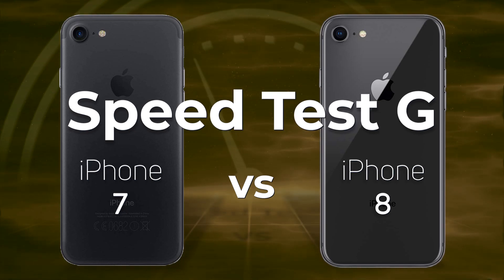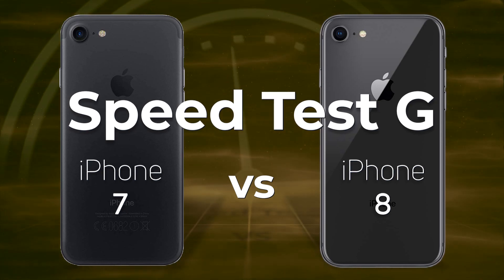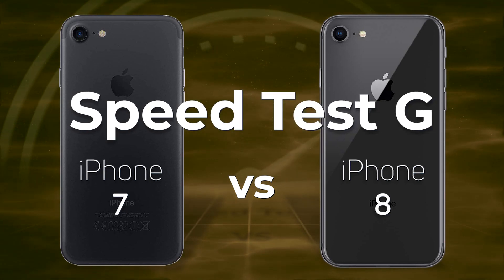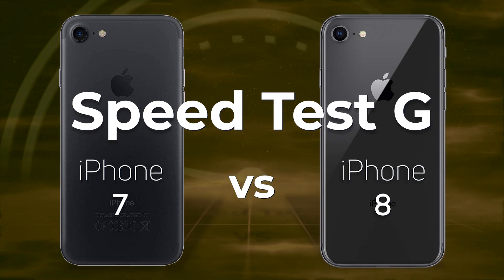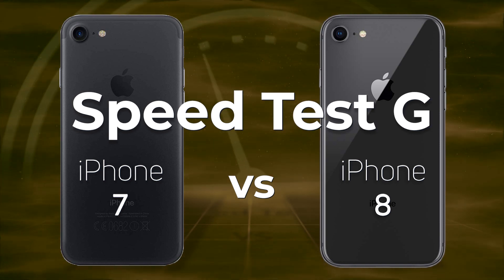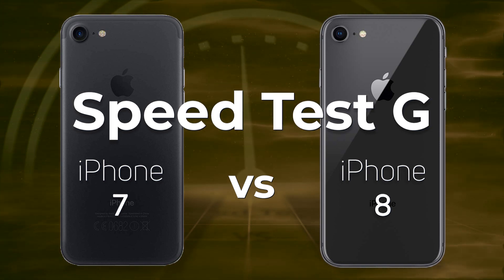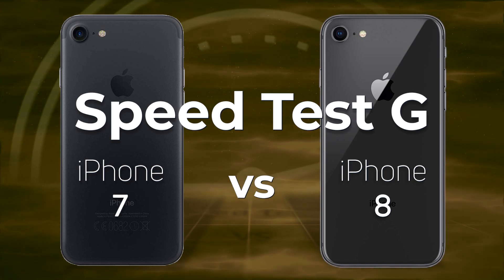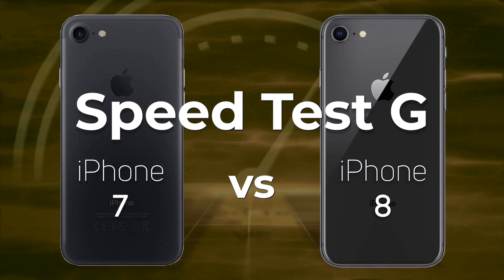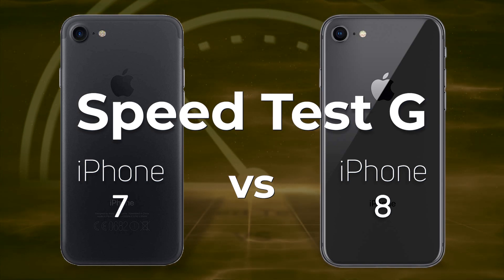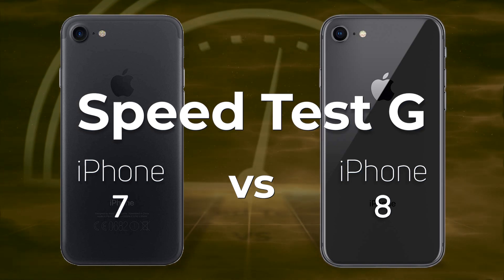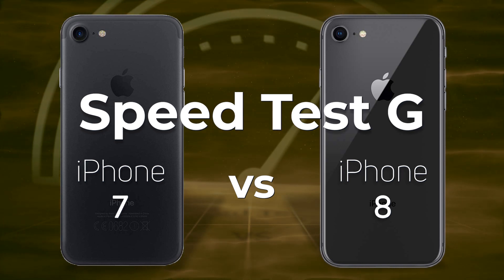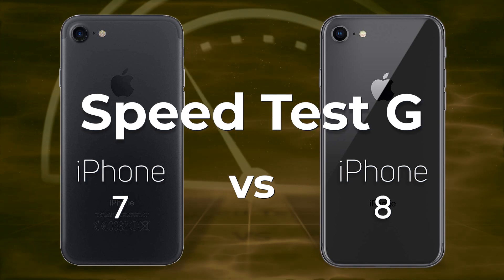The 2016 iPhone 7 used the Apple A10 Fusion, a quad-core processor, and the iPhone 8 from 2017 used the Apple A11, a hexa-core processor. When you compare the iPhone 7 to the iPhone 8, they've both got the same screen resolution, so the biggest change is probably that of the processor.